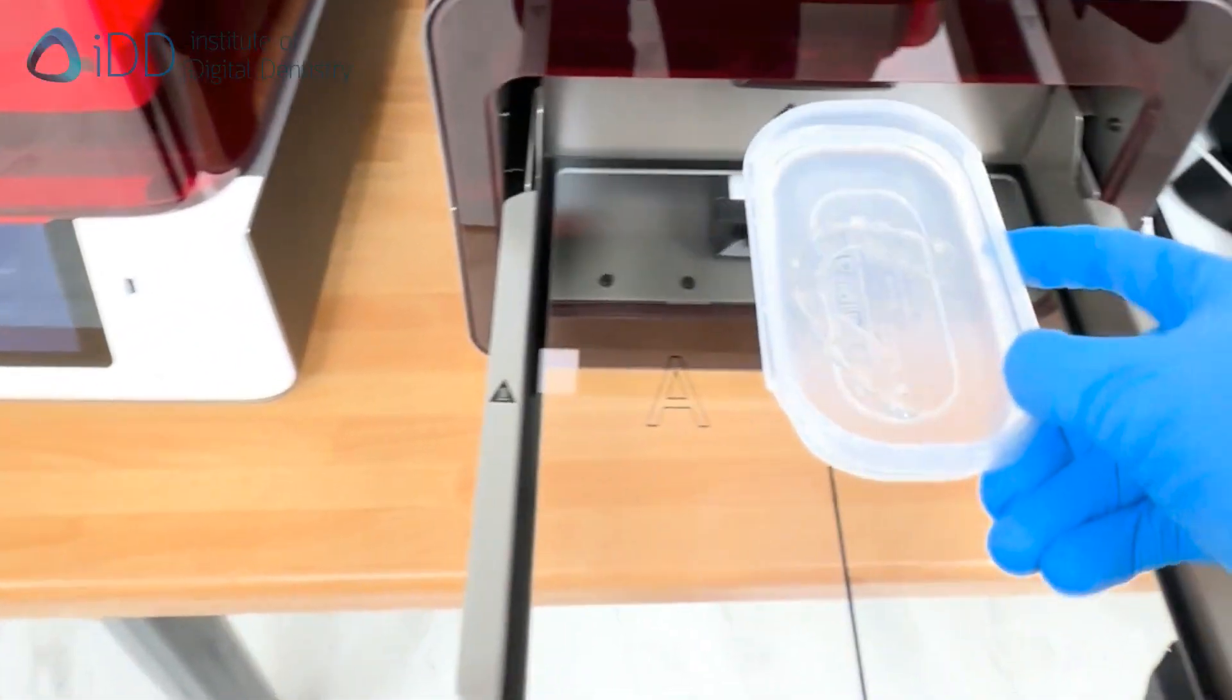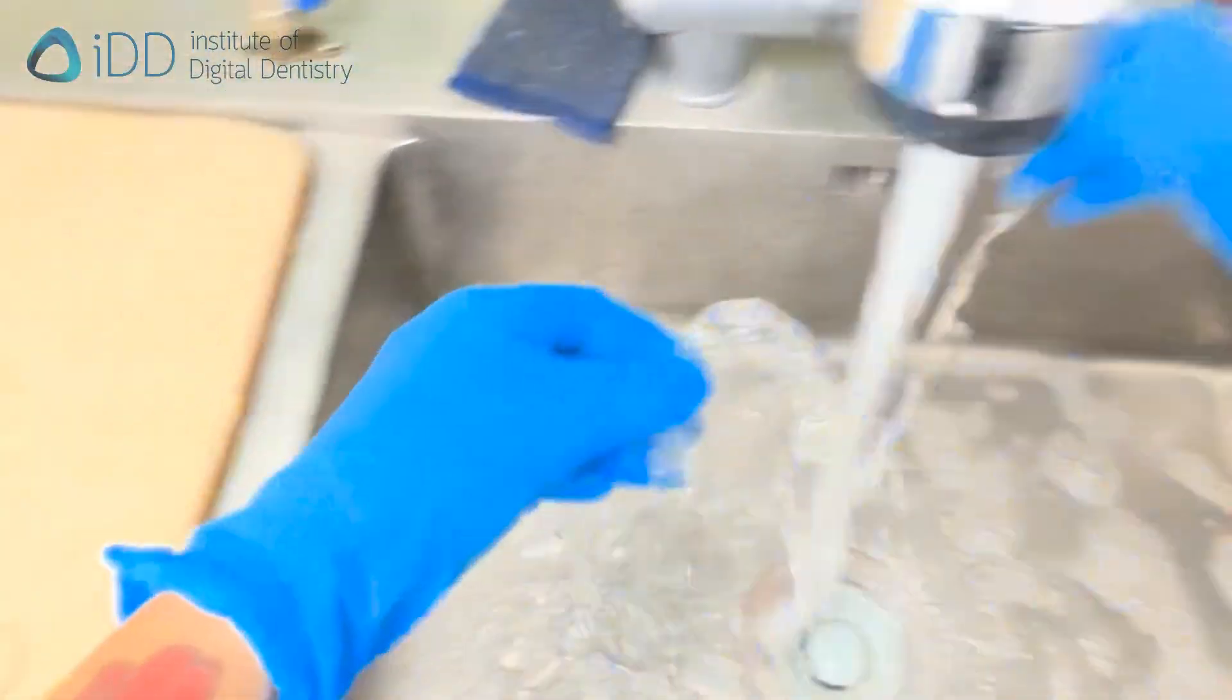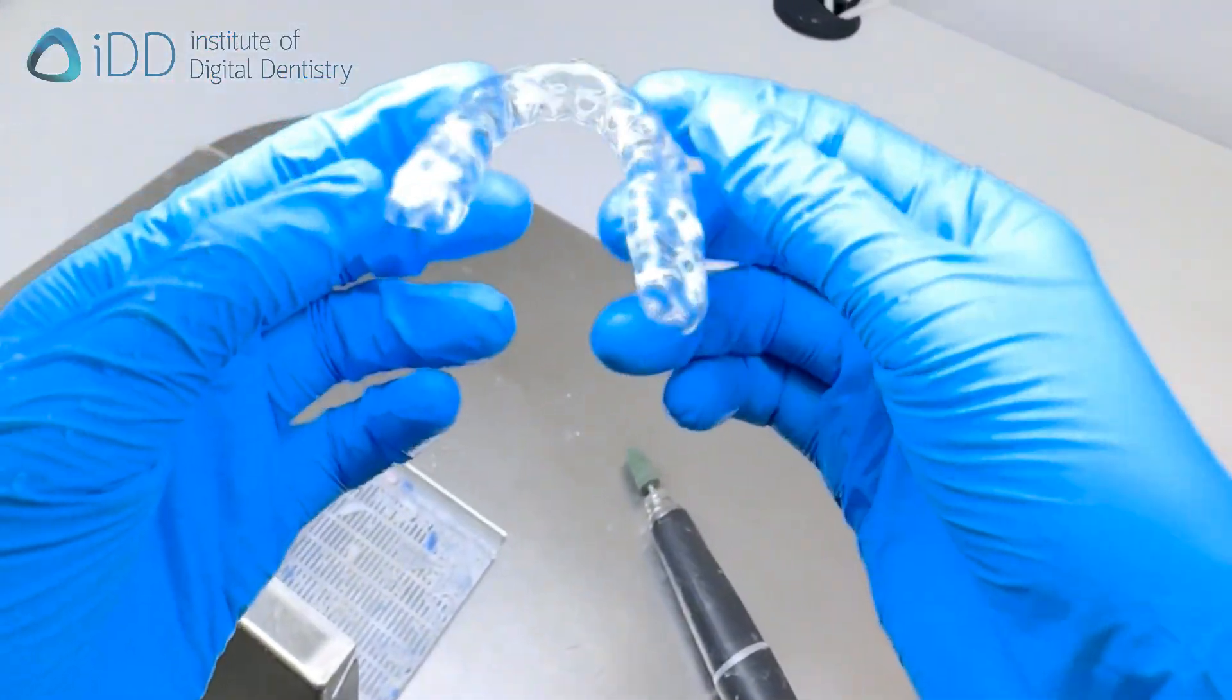After finishing the full cure cycle, I then wash the splint in running water and dry. And that's it, a splint completed using the candy coating technique.